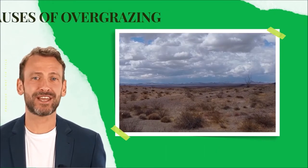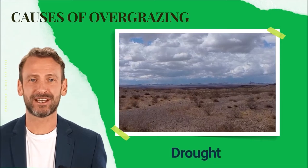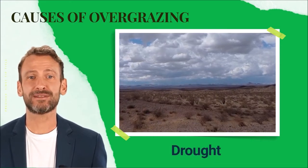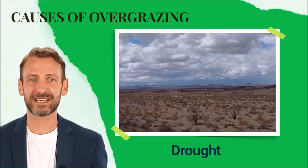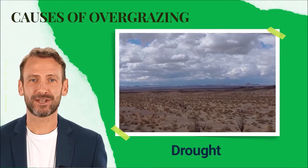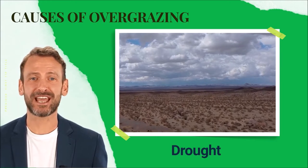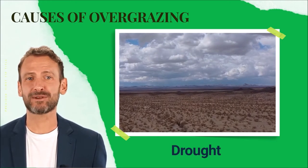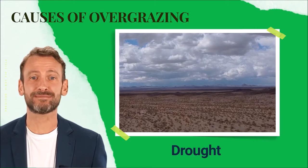Drought can be defined as prolonged water shortage in an area. When there is no water, pasture cannot recover in good time. During periods of drought, livestock and wildlife overgraze on the available pasture due to food scarcity.